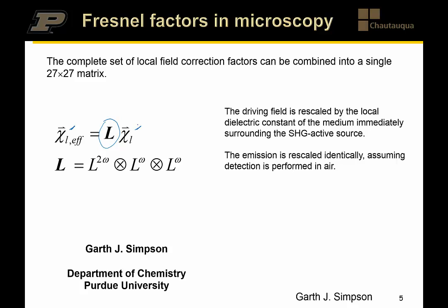This L matrix, if it's not the identity matrix — if we really do need to include Fresnel factors explicitly — we can plug that in and generate L by taking L-2-omega and then convolving that with L-omega twice to make a 27-by-27. What that effectively does is rescale each of the appropriate tensor elements in the local frame to make an effective local frame tensor that incorporates all of the refractive index rescaling contributions. Ideally we want to recover this from measurements, but this is straightforward to build into the existing linear algebra architecture.